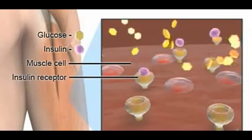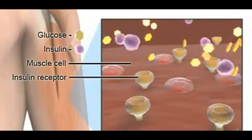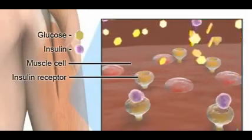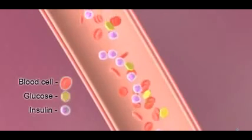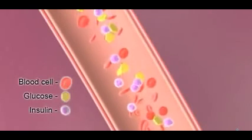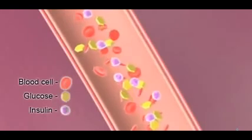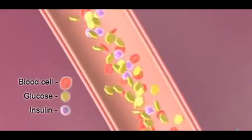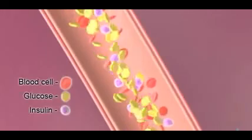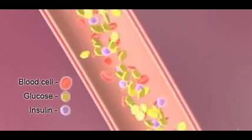Type 2 diabetes develops when your body becomes resistant to insulin, so glucose isn't available to the parts of the body that need it. When the body's tissues, for example your muscles, don't respond to insulin, they can't make use of the glucose in the blood for energy. As a result, glucose stays in your bloodstream and your blood glucose levels are raised.